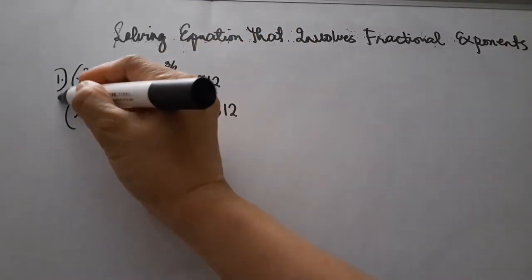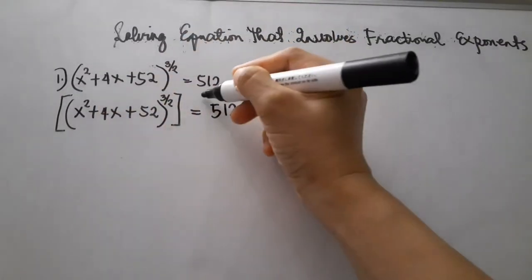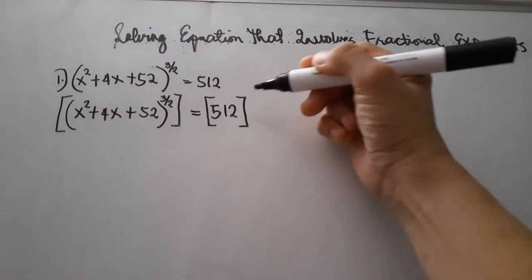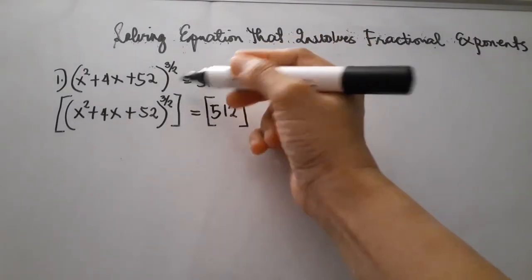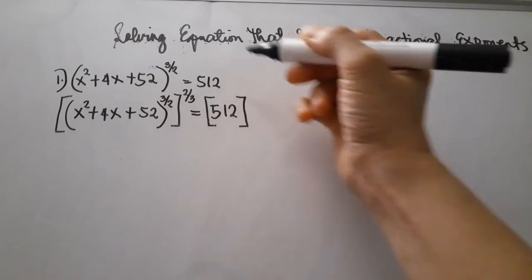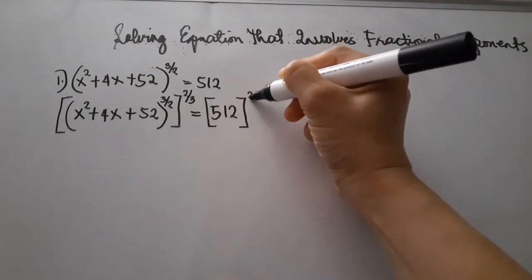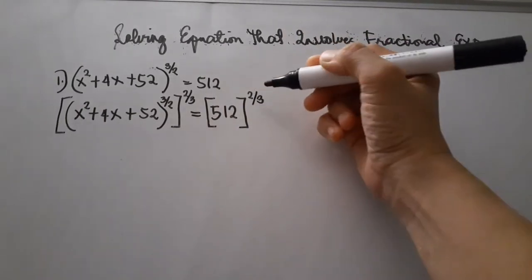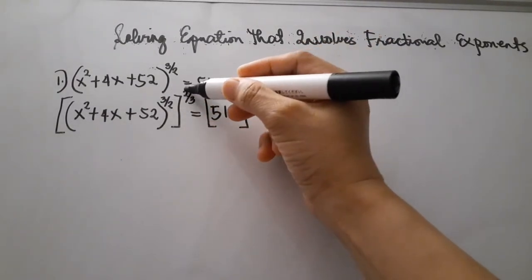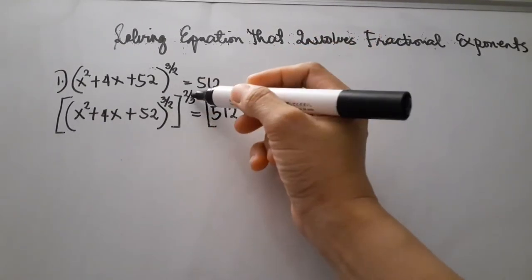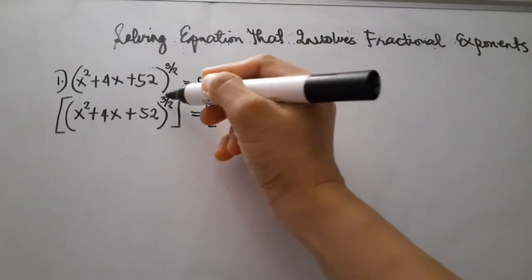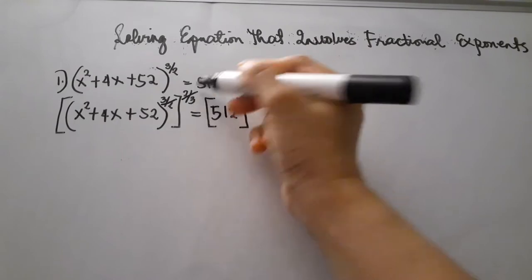We can raise both sides by the reciprocal of the exponent. The reciprocal of 3 halves is 2 thirds. We apply that same reciprocal to the right side as well — raising both the first exponent and the second exponent each by the reciprocal of the other.